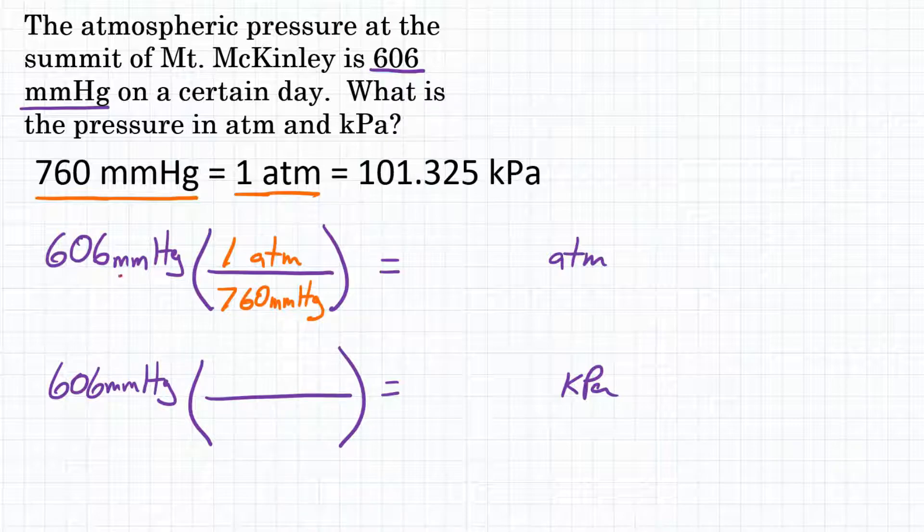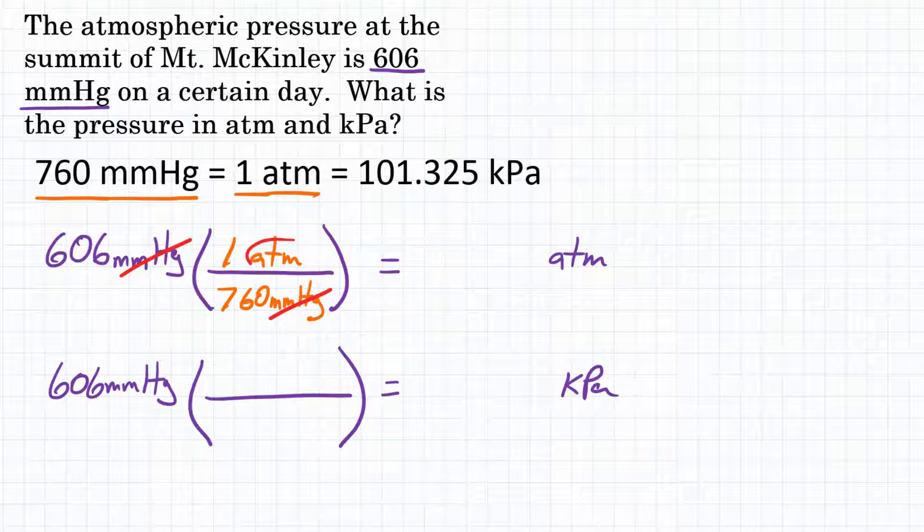Looking at our units, millimeters of mercury is going to cancel because it is on top and bottom, and we will be left with atmospheres as our unit, which is what we want.